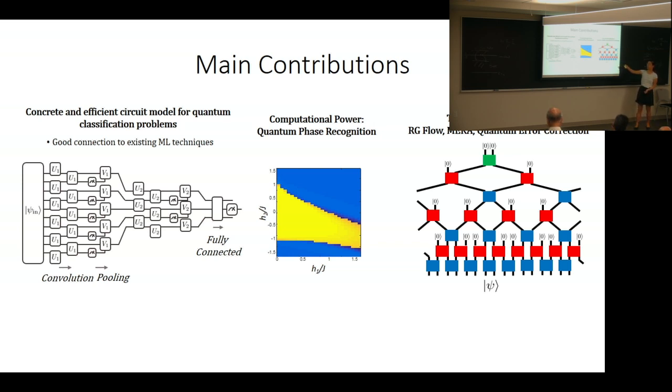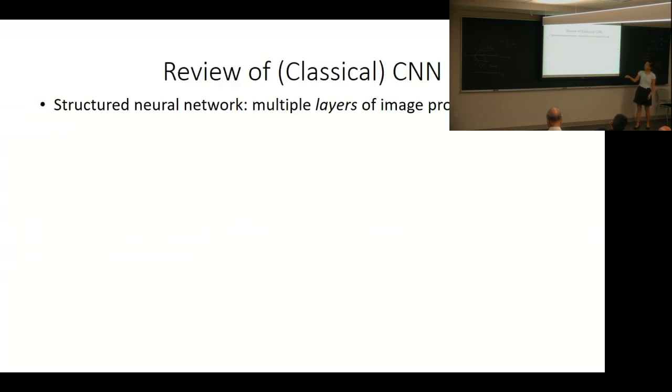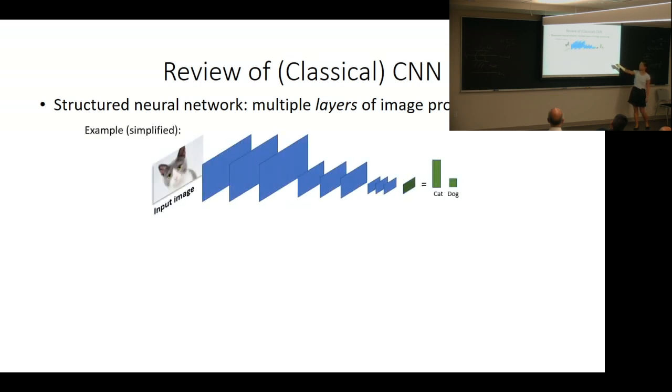In particular, our circuit model is inspired by existing machine learning techniques. The technique we're looking at is CNN - convolutional neural network. CNNs for classical computation are feedforward networks with many different kinds of layers.